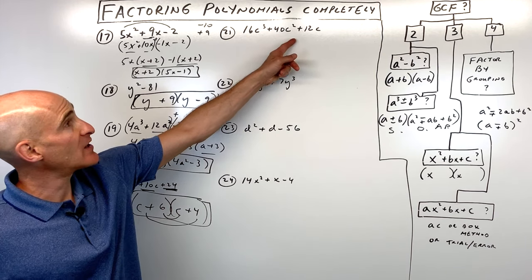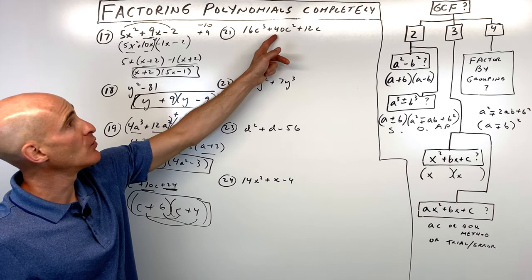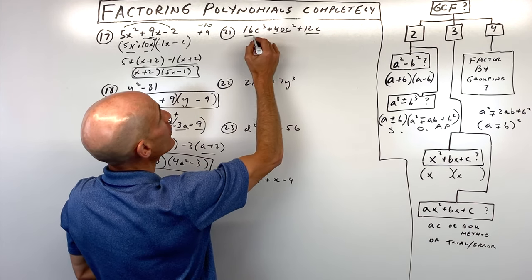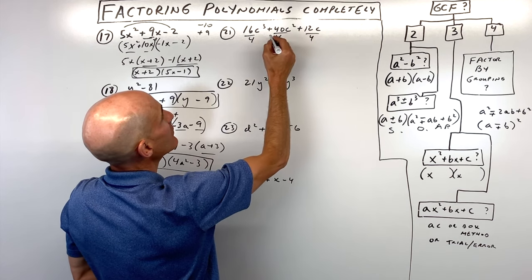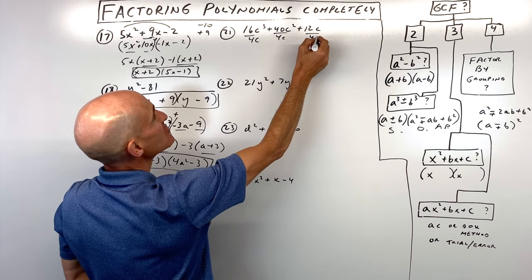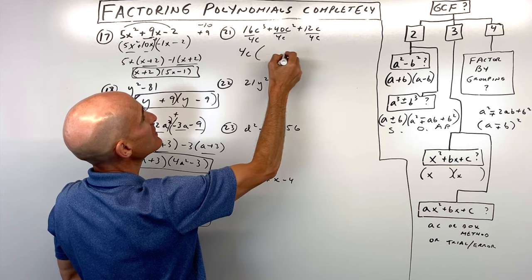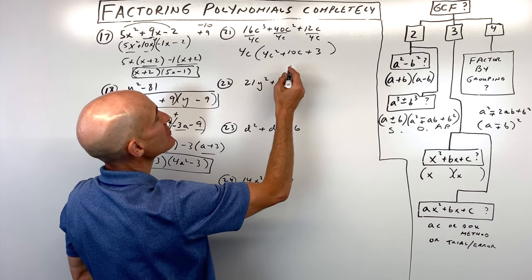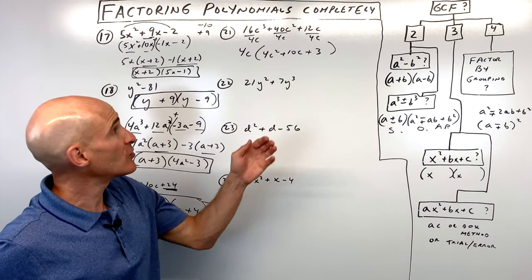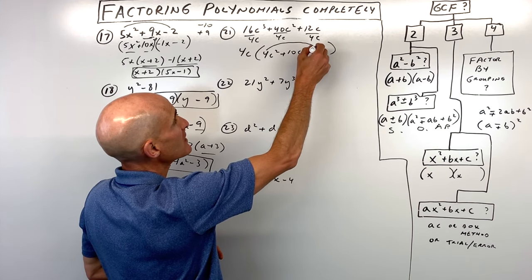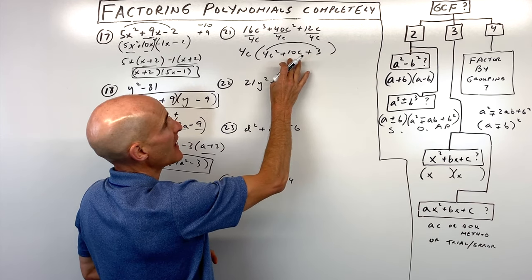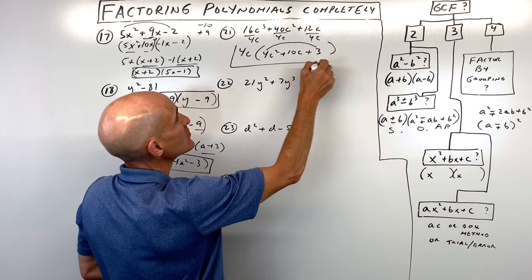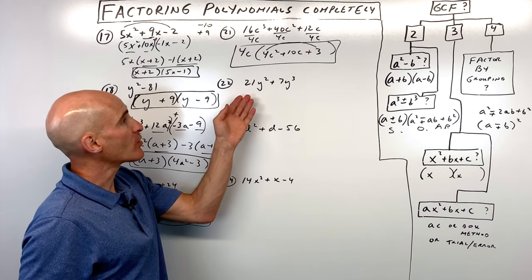Number twenty-one is a trinomial where we can factor out a greatest common factor of 4c. That gives us 4c times 4c squared plus 10c plus 3. Using the AC method on what's inside, 4 times 3 is 12 — what multiplies to 12 but adds to 10? There isn't anything. So this was just a greatest common factor problem and we can't factor it further.